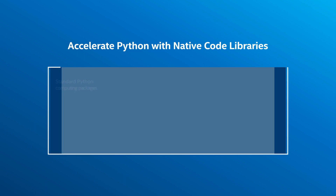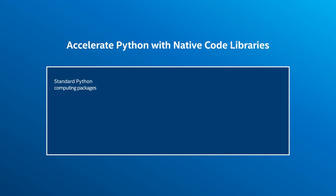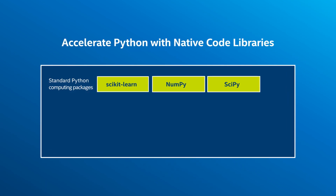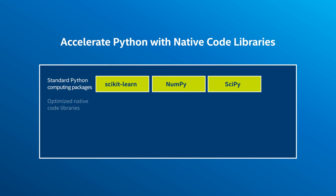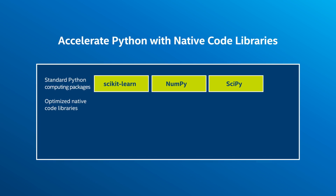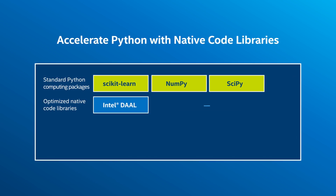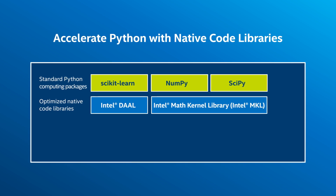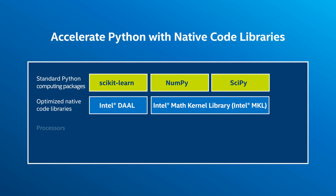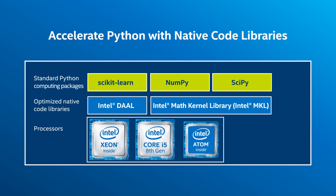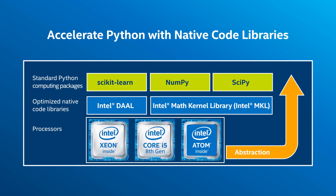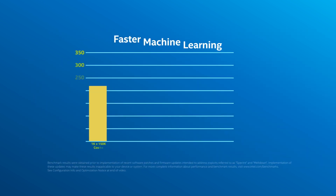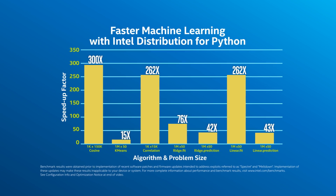To achieve near-native code performance, widely used packages NumPy, SciPy, and scikit-learn are accelerated under the hood with the highly tuned Intel DAAL and Intel Math Kernel Library. These libraries are written in C and assembly language; they're threaded and vectorized to take full advantage of all Intel processor families.